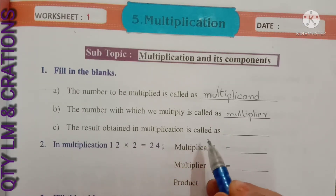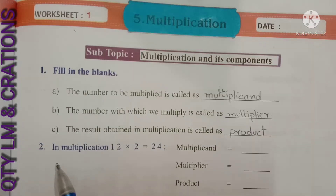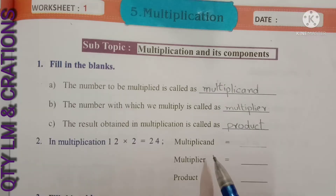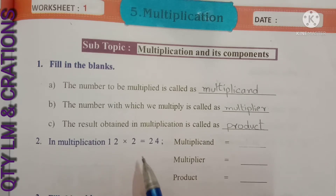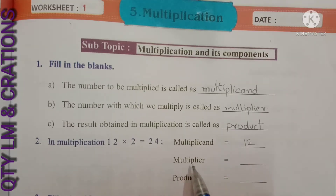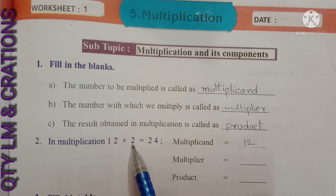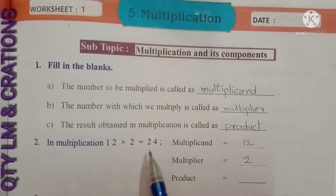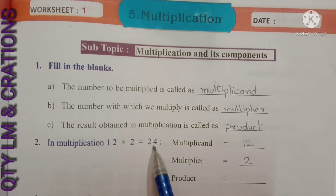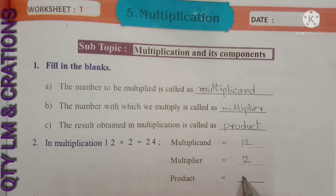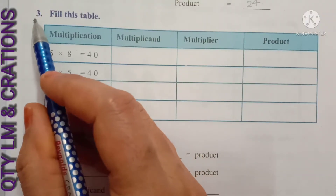C: the result obtained in multiplication is called the product. Next question: in multiplication, 12 into 2 equals 24. Here the number 12 is getting multiplied by 2, hence 12 is called the multiplicand. The number 2 is being multiplied with 12, hence 2 is called the multiplier. The result obtained, 24, which is shown on the right side of the equal symbol, is called the product.